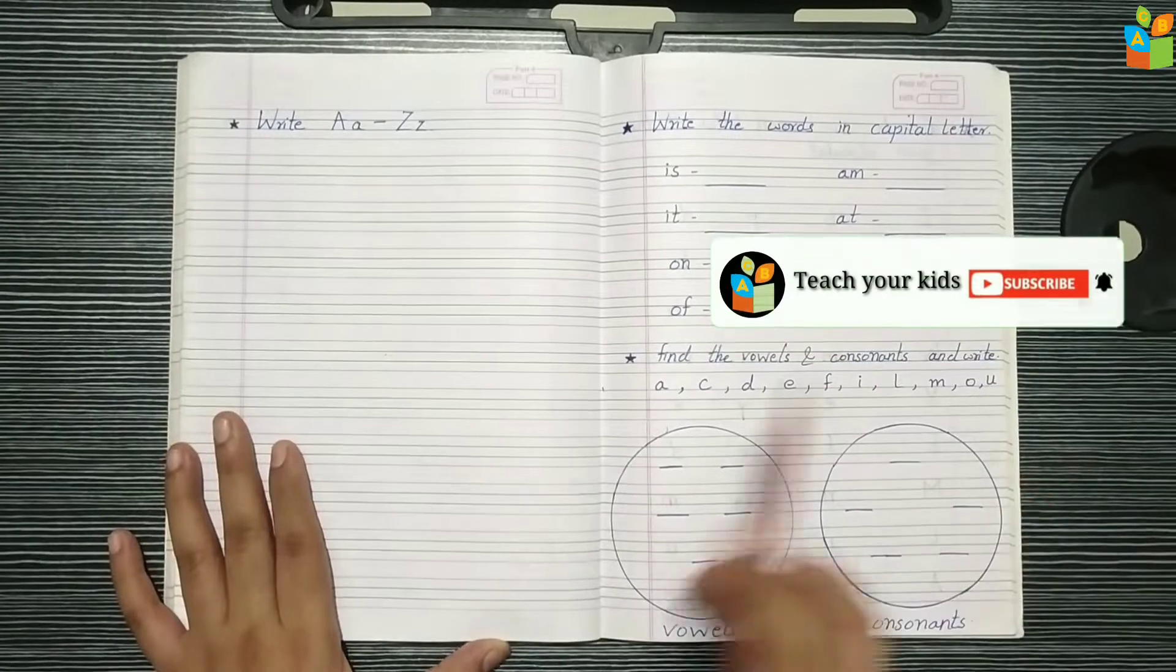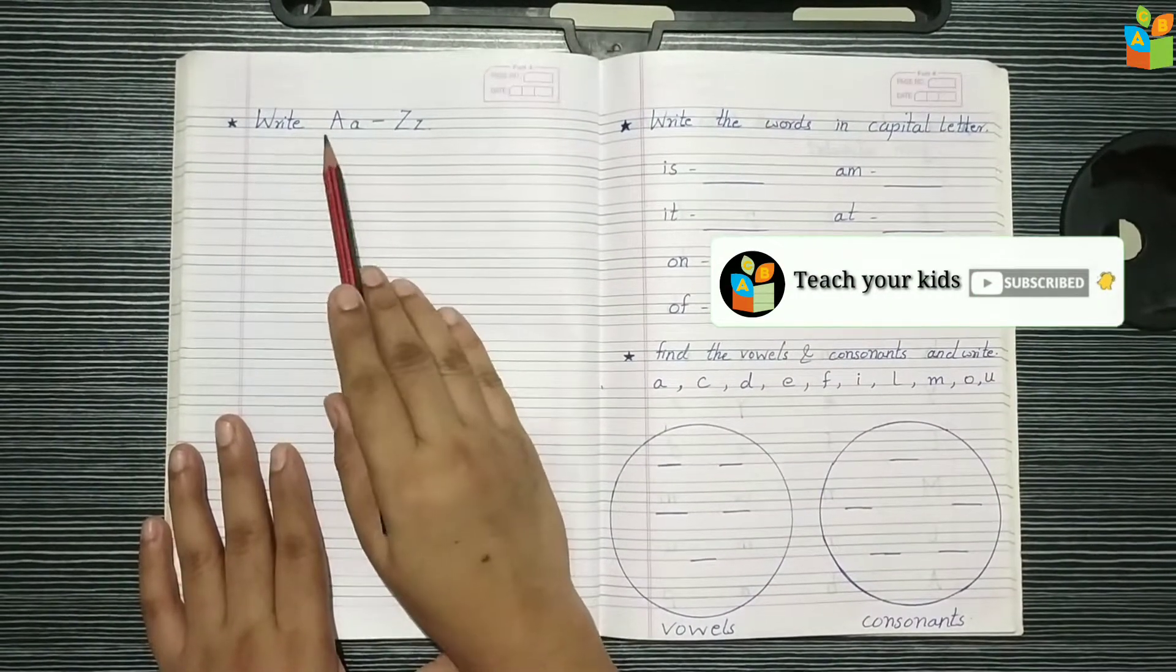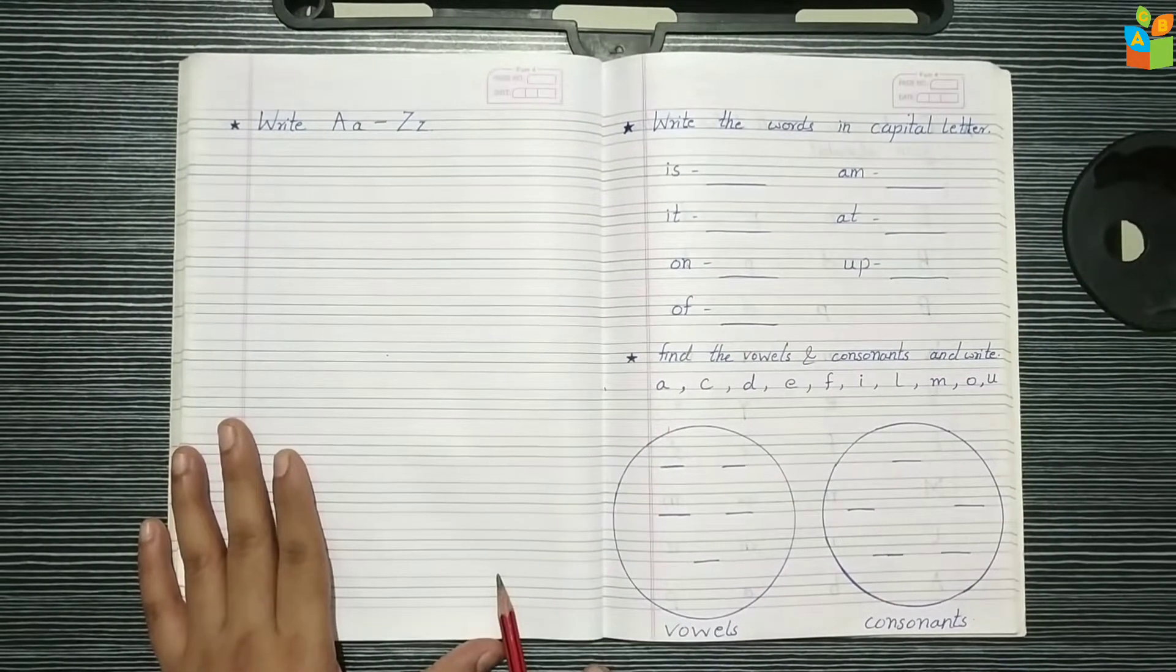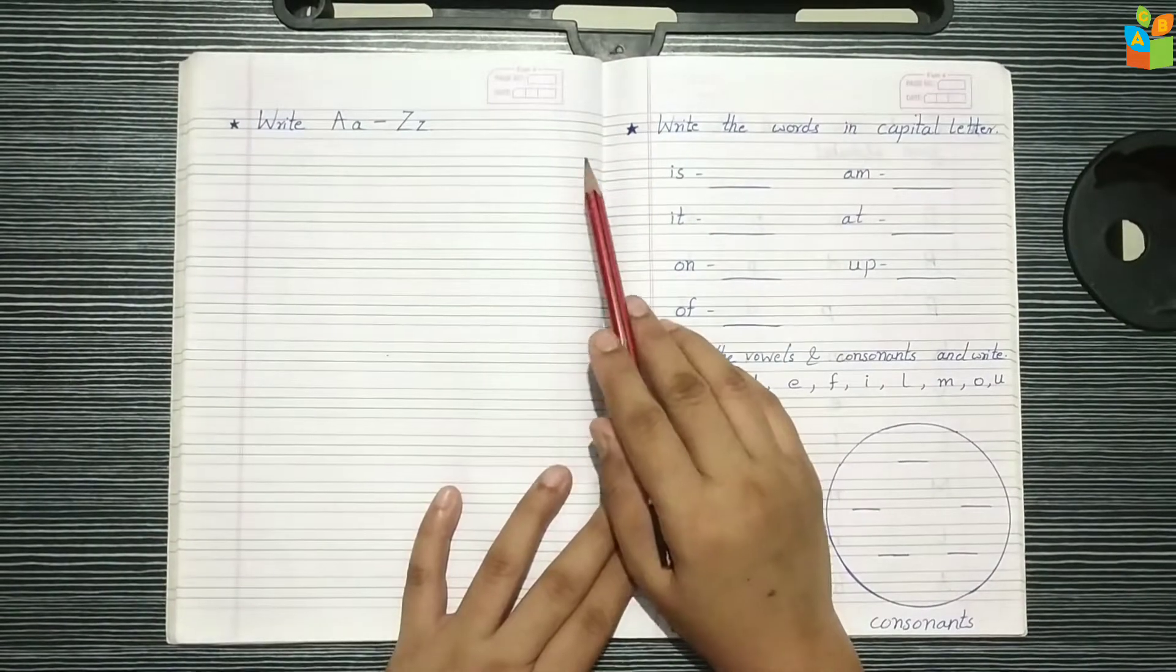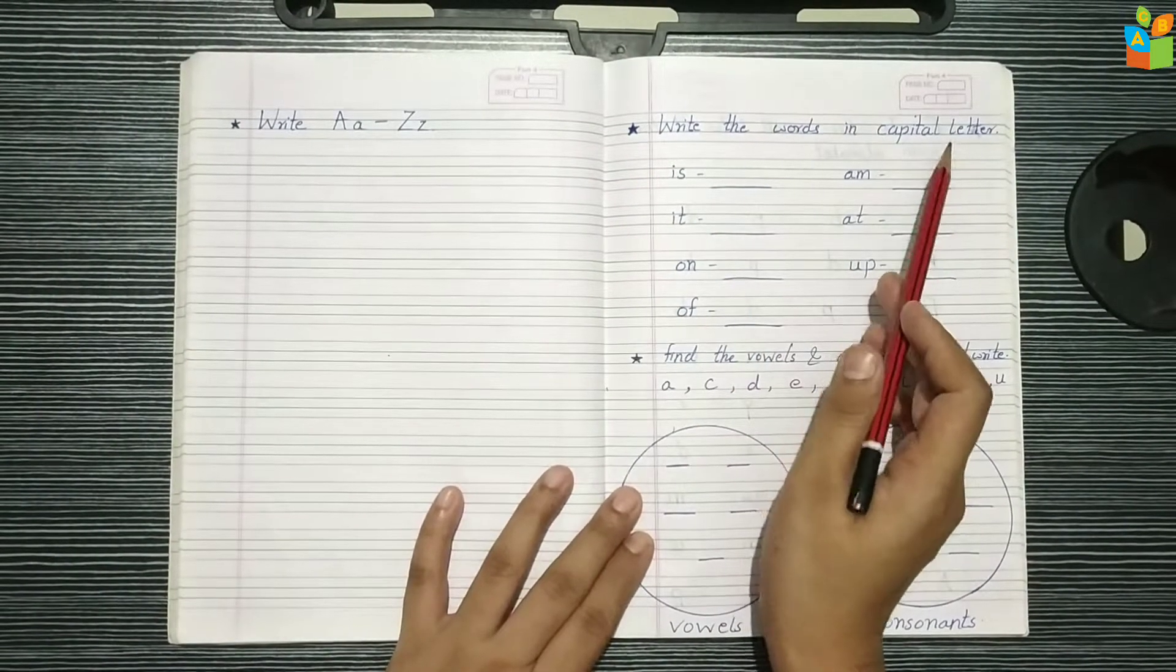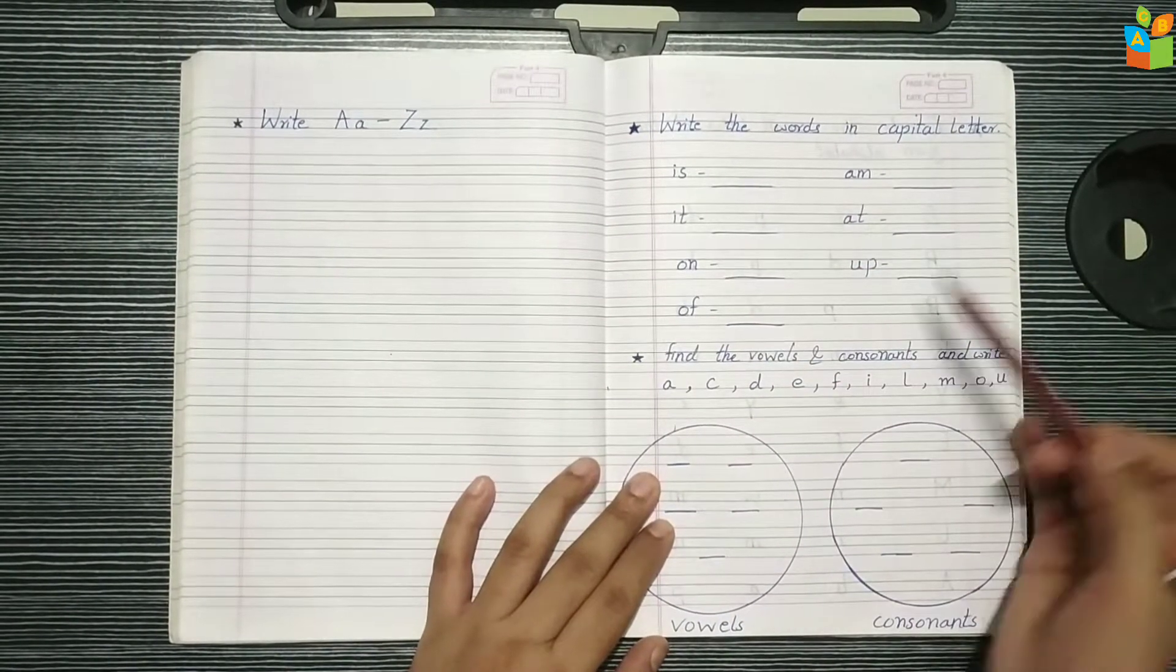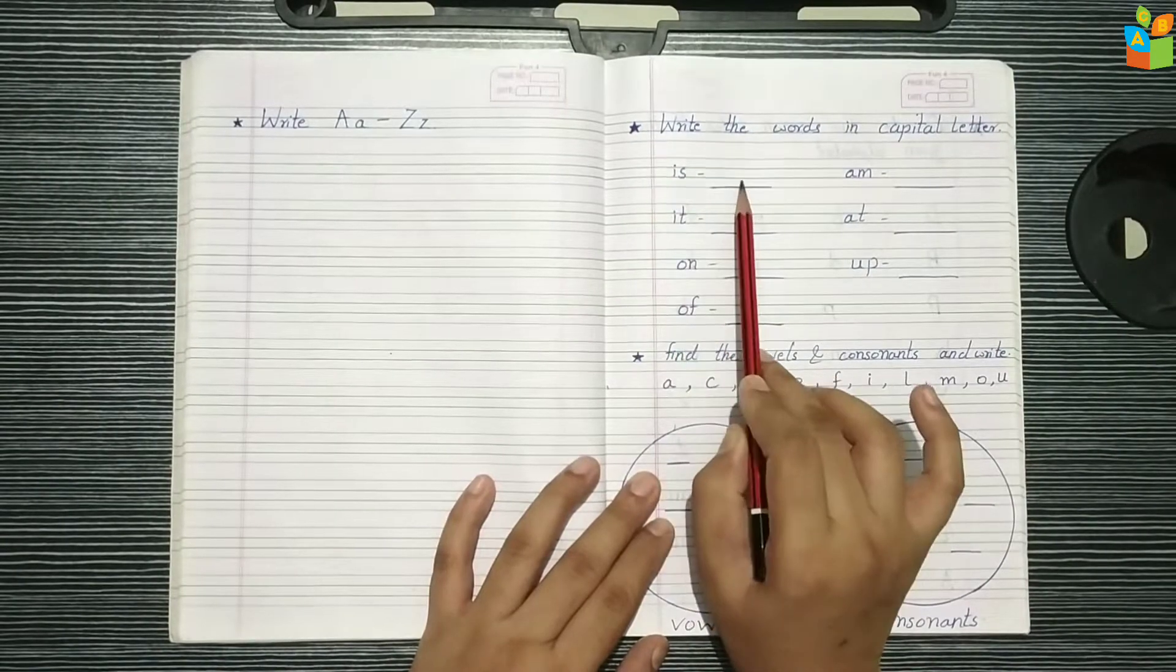In English, I have written A to Z. What do you have to do here? Capital and small. I have given two letters A to Z here with space. Write the words in capital letter. I have written a few two letter words here. What do you have to do? Write them in capital letter.